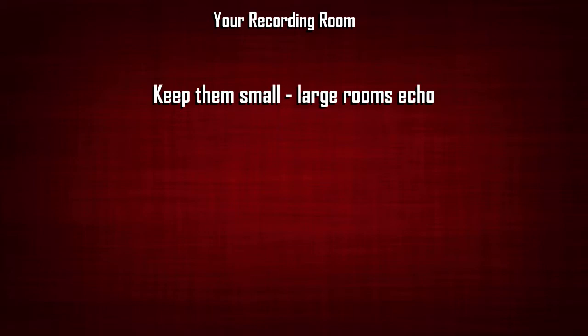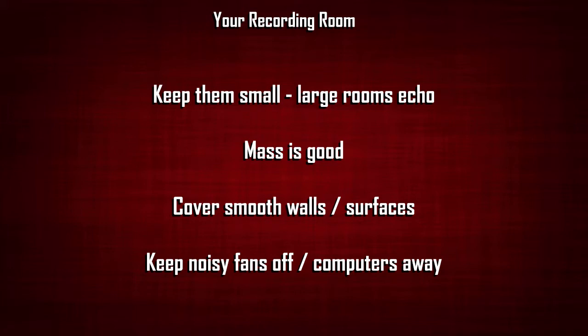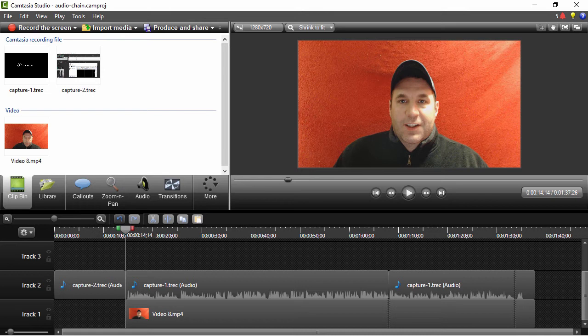Here's the room that I have set up. I've got some acoustic foam kind of blocking things out — nothing too fancy, but enough to get rid of a lot of the echo. And I'm using the Rode Podcaster microphone. Mine is definitely still a work in progress, but you want to try to keep rooms small because large rooms echo a lot. Mass is good for the walls — if you can double up your sheetrock, it will keep the sound out. Cover smooth surfaces with foam or blankets. Try to keep noisy fans off and keep your computer away from the microphone. The Rode Podcaster is very good at not picking up a ton of ambient noise. I generally don't do anything to the audio here — I visually look to see that it's at a decent level and give it a quick listen.